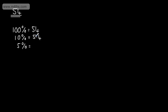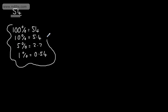5% is half of 10%, so it's going to be half of 5.4, which is 2.7. 1% is one-tenth of 10%, so dividing by 10 again gives us 0.54. From these values, we can make up any multiple. For example, to make 16%, we would add 10%, 5%, and 1%. For 8%, we might do 5% plus three lots of 1%, or 10% minus two lots of 1%.